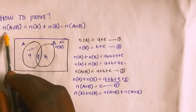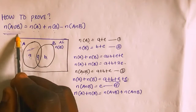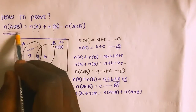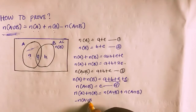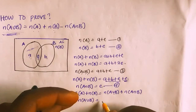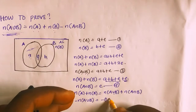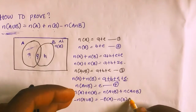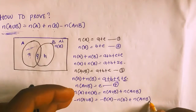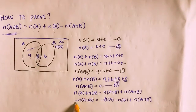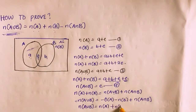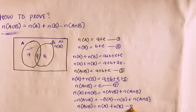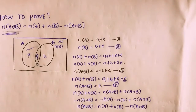Now, cardinality of A union B is the subject of the formula. Rearranging, minus cardinality of A union B equals minus cardinality of A minus cardinality of B plus cardinality of A intersection B. Multiplying all through by minus one, cardinality of A union B equals cardinality of A plus cardinality of B minus cardinality of A intersection B. This is what has been proved.